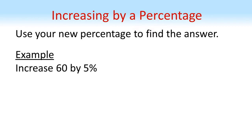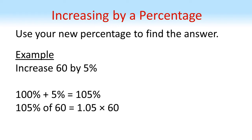Let's increase 60 by 5%. We're going to end up with 105%, so our question becomes find 105% of 60, which using the multiplier method is 1.05 times 60, giving us an answer of 63.